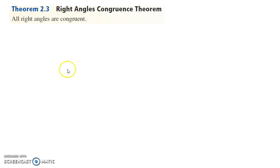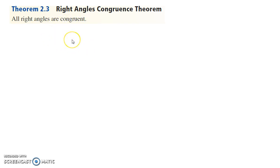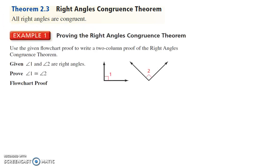The Right Angles Congruence Theorem states that all right angles are congruent. Obviously, they are all 90 degrees, so their measure is equal, which makes them congruent. We want to prove that right angles are congruent. Here we are given two angles — angles one and two are right angles — and we want to prove that angle one is congruent to angle two.